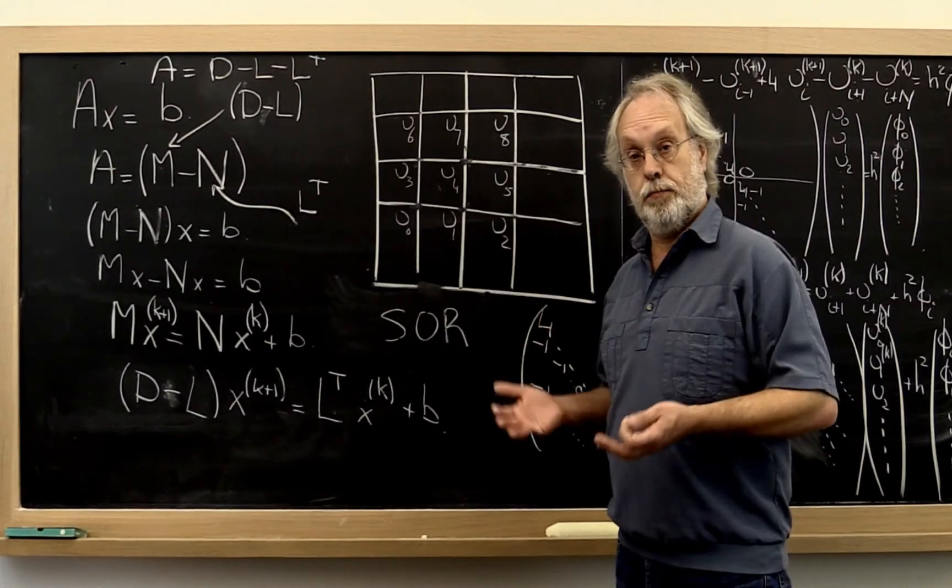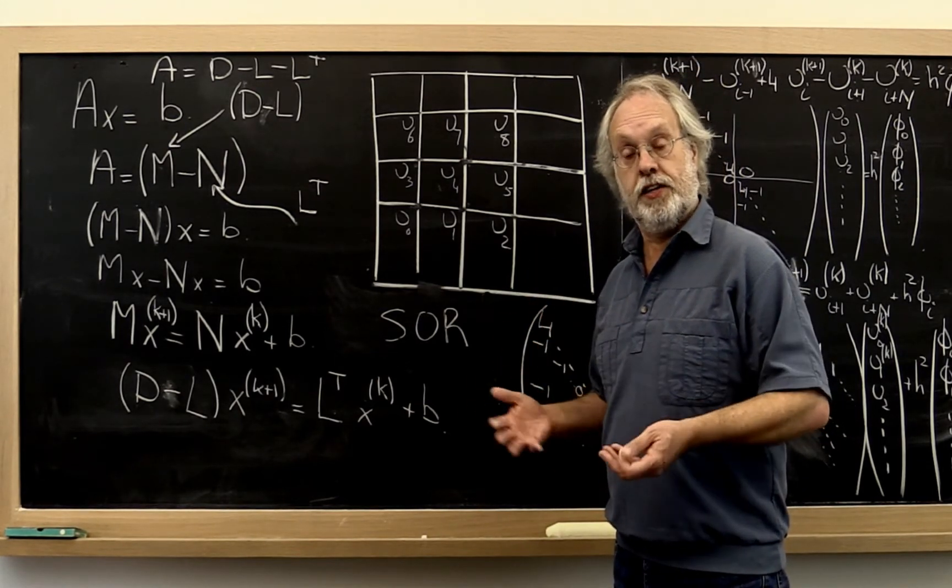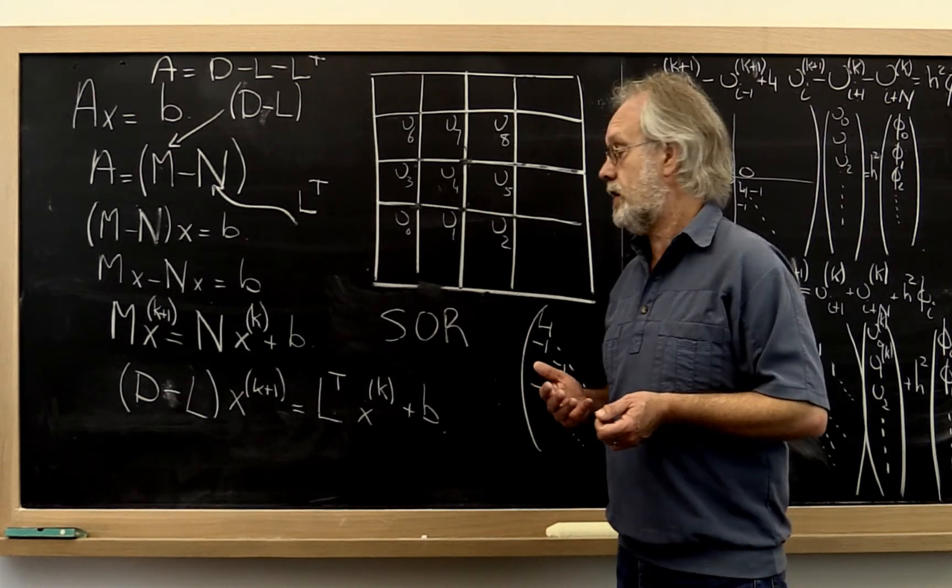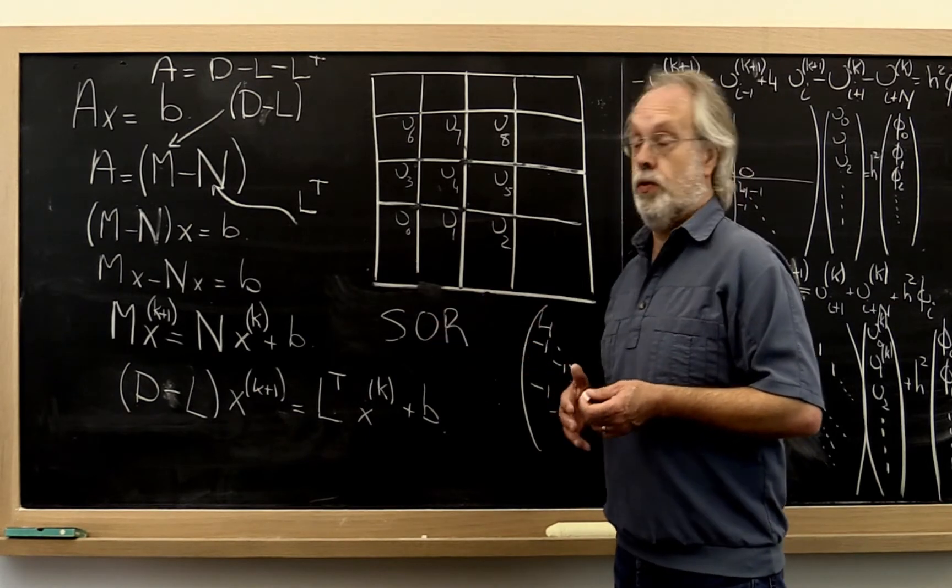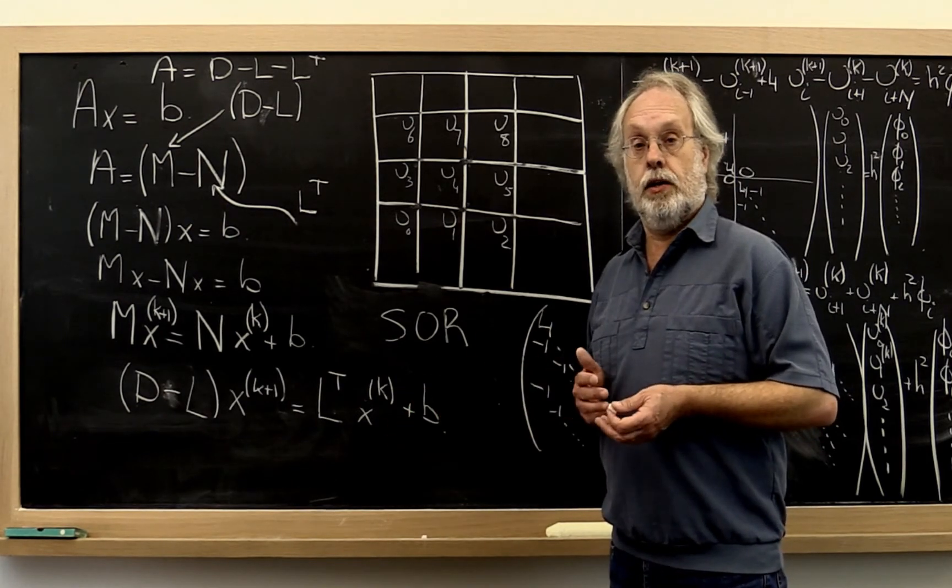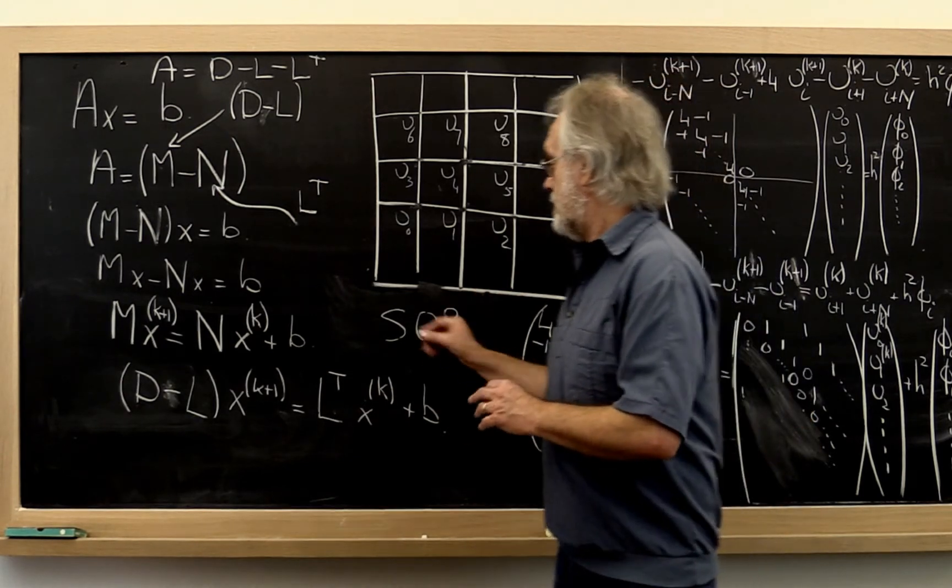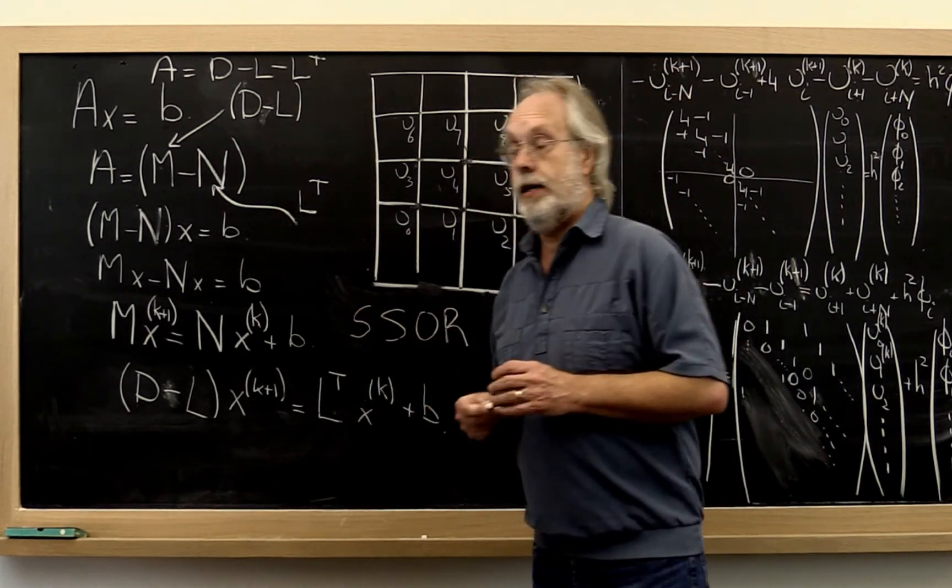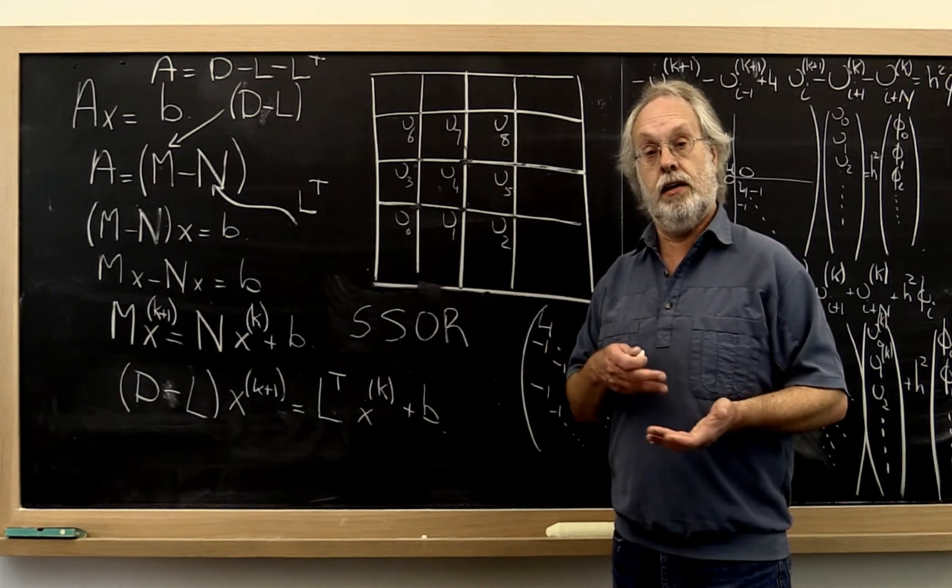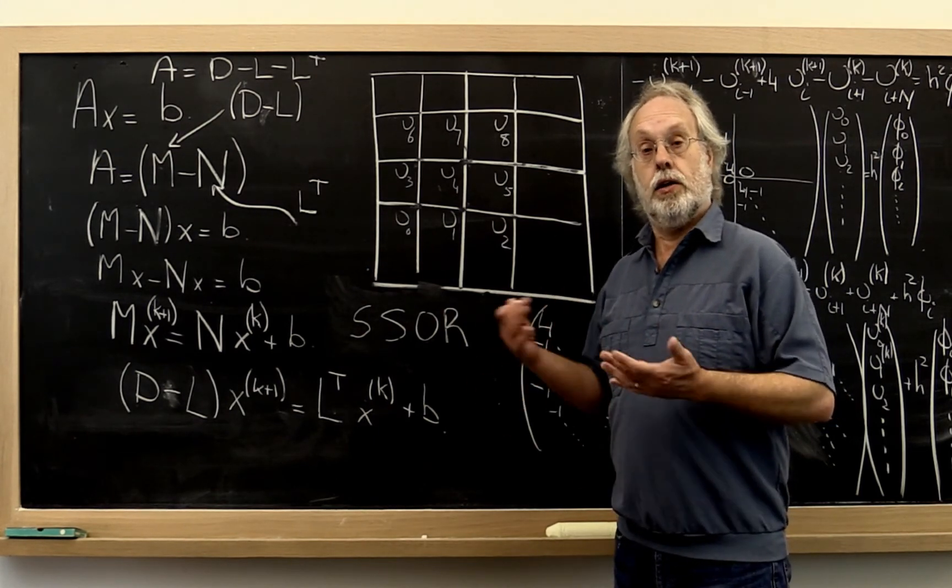We can borrow ideas from symmetric Gauss-Seidel, which had benefits including that the splitting matrices are symmetric if the original matrix is symmetric. Applying that to successive over-relaxation, which we derived from Gauss-Seidel, gives us symmetric successive over-relaxation, or SSOR. SSOR also has the benefit that if the original matrix A is symmetric, then the splitting matrices M and N are also symmetric.